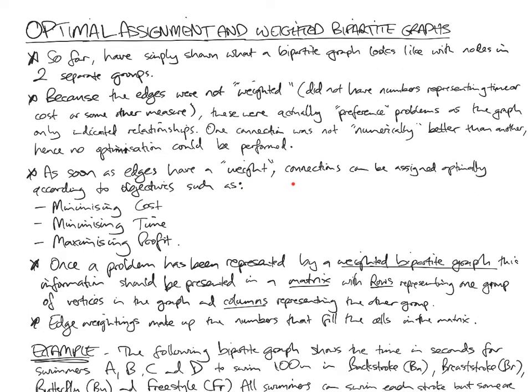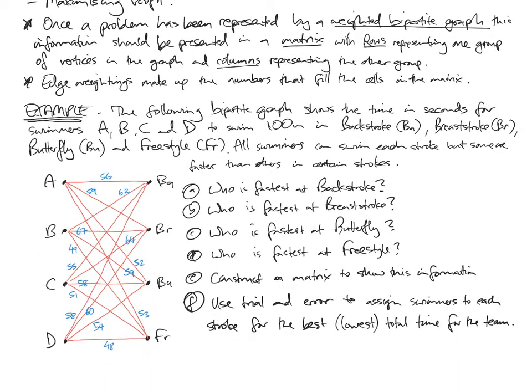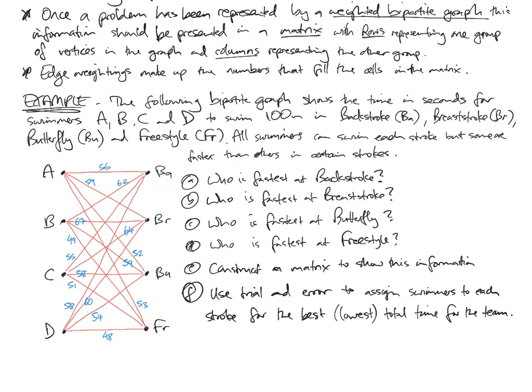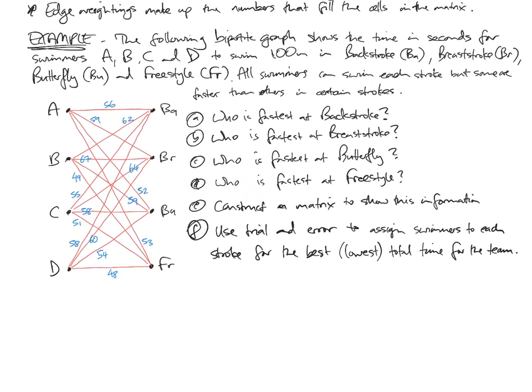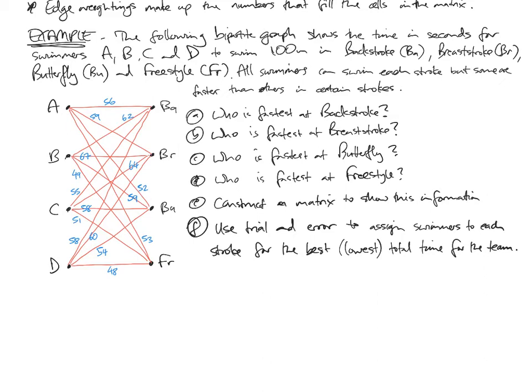So as soon as edges have a weight to them, connections can be assigned optimally according to objectives, such as minimizing costs, minimizing time, maximizing profit. Once a problem has been represented with a weighted bipartite graph, this information should be represented in a matrix with rows representing one group of vertices in the graph and columns representing the other group of vertices in the graph. Then the edge weightings make up the numbers that fill the cells in the matrix. So if you're not familiar with matrices, it's not that difficult. You can catch up very quickly just through seeing an example. The main gist of this video should be converting a weighted bipartite graph to a matrix representing that info.